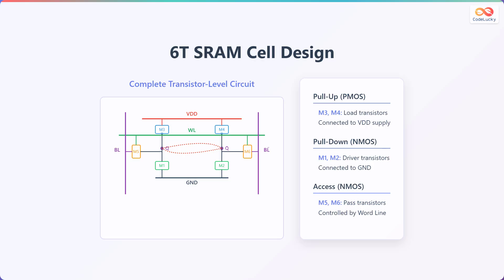The pull-down transistors, M1 and M2, serve as driver transistors connected to ground. The access transistors, M5 and M6, are pass transistors controlled by the word line.